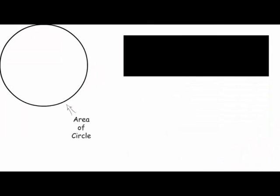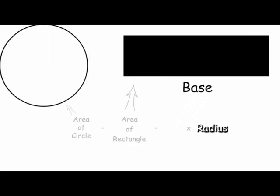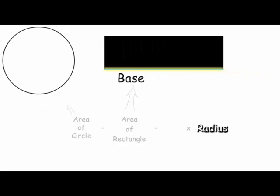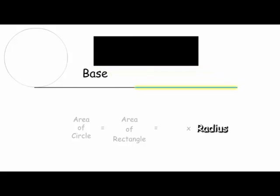So the area of the circle is equal to the area of the rectangle, which is equal to base times height. The height of the rectangle, as you can see, is the same as the radius. So height is equal to radius. To find the base, we need to look at the circumference of the circle. And when we compare the base and the circumference, we can see that the base is equal to one half the circumference.